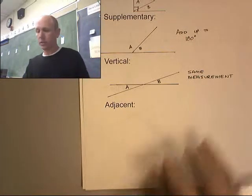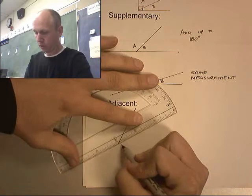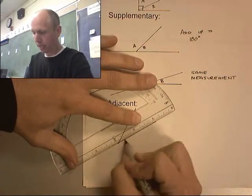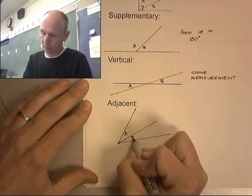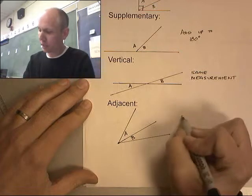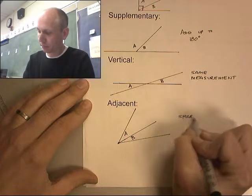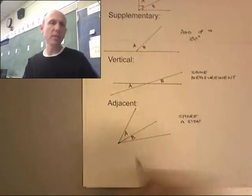And adjacent angles. And adjacent angles are angles that share a side. So A and B, those guys share this side right here. They share a side. Okay, let's do some problems.